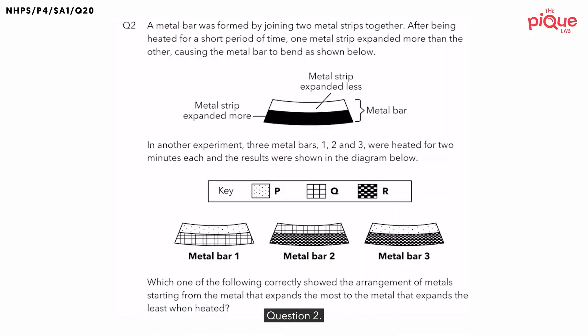Question 2. In this question, a metal bar was formed by joining two metal strips together. After being heated, one metal strip expanded more than the other. From this diagram, we can see that the shaded metal strip is longer than the unshaded metal strip.